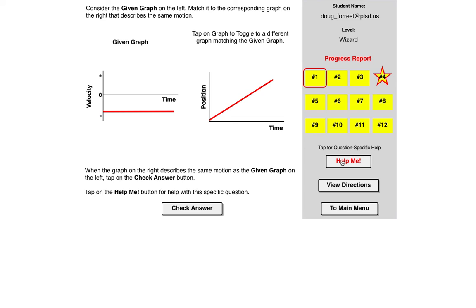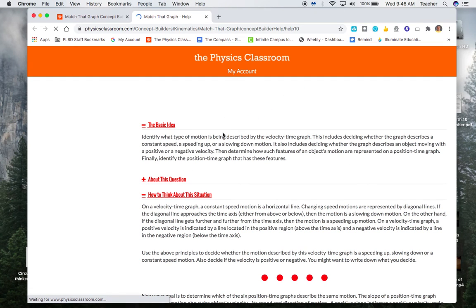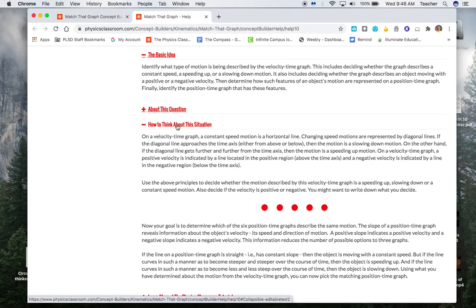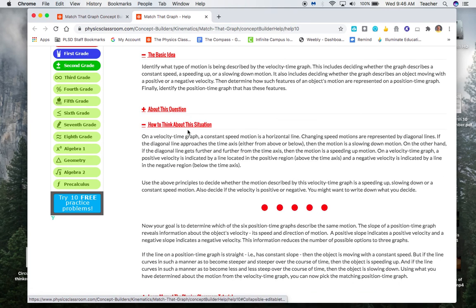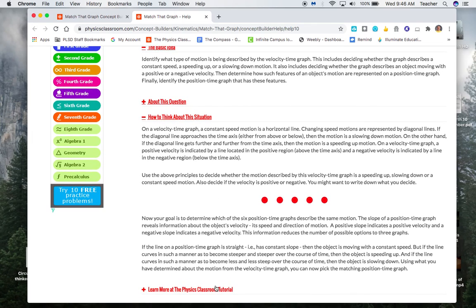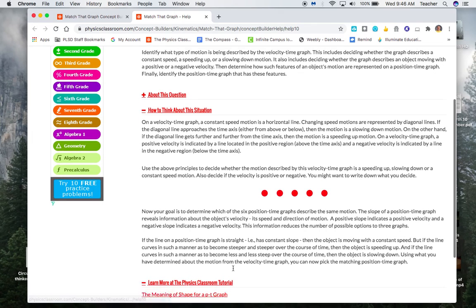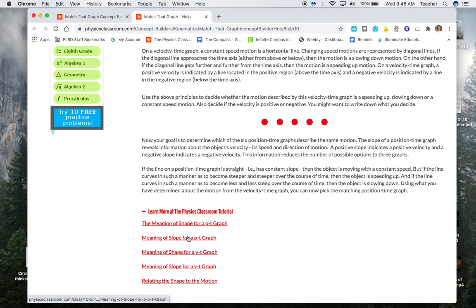Now, remember, there's ways you can go to get some help. If you click on something like this, this will tell you about the basic idea about this particular question, how to think about the question. And then if you need to go to the Physics Classroom for parts, meaning the shape of those types of things, that'll help out.